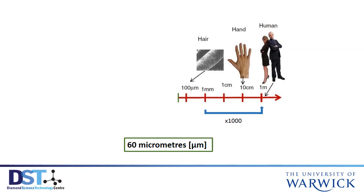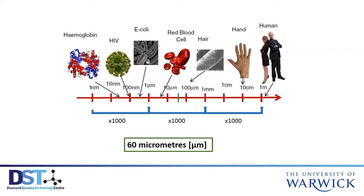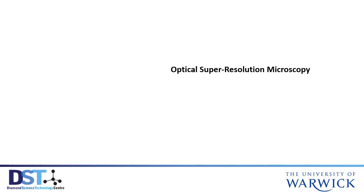What do we do if we want to go smaller — to see cells and bacteria, or even nanometer scale viruses and proteins, all of which play vital roles in all forms of life and are therefore important to understand? We need to utilise technology to observe down to this level, namely optical super-resolution microscopy.